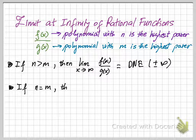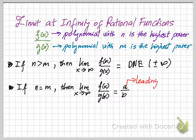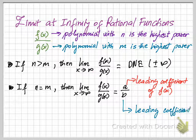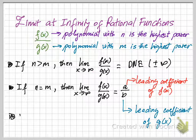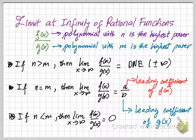In the second case, if n equals m, then the limit of these functions will equal the quotient of a and b, where a is the leading coefficient of f of x and b is the leading coefficient of g of x. And the last case is when n is less than m — then the limit of these functions is just going to be zero.